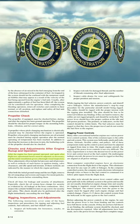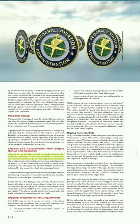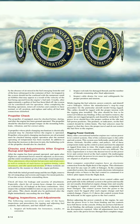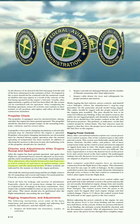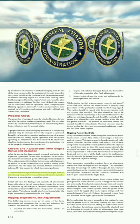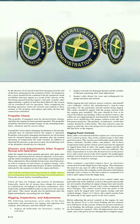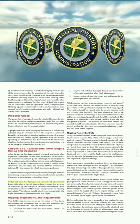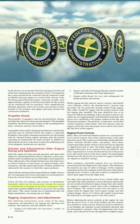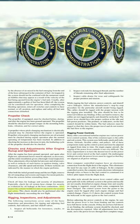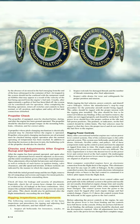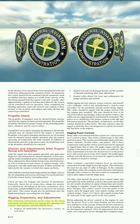Checks and Adjustments After Engine Run-Up and Operation: After the engine has been ground operated and again after flight test, operational factors must be adjusted as necessary and the entire installation given a thorough visual inspection. These adjustments often include fuel pressure and oil pressure, as well as re-rigging of such factors as ignition timing, valve clearances, and idle speed and mixture. Remove the oil sump plugs and screens and inspect for metal particles. Check all lines for leakage and security of attachment, especially check oil system hose clamps for security. Inspect the cylinder hold-down nuts or cap screws for security and safety.